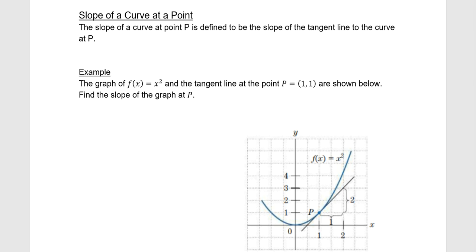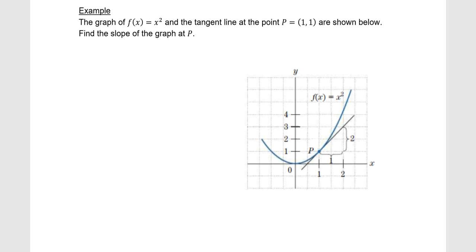Now let's get into the slope of a curve at a point. When we say the slope of a curve at a point, it's actually the slope of the tangent line to the curve at that point. We have the function f(x) = x², which is our parabola, and we have the tangent line at point P, which is the point (1, 1). We want to know the slope of the graph at point P, and since we're given the tangent line, we can figure out the slope of the tangent line, which is actually written here.